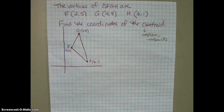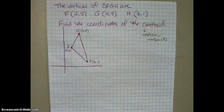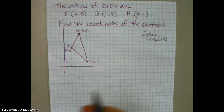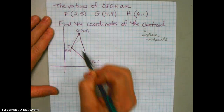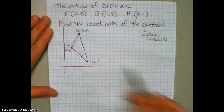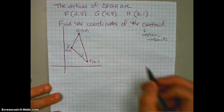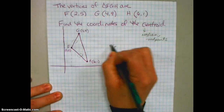We really only need to do two of the segments, because if we see two of those segments intersecting at a point, then we also know that the third median is intersecting at that same point called the centroid. So I'm going to do this in two takes, kind of like I did the circumcenter. This is take one, and I'm going to pick two sides of my triangle — FG and FH.